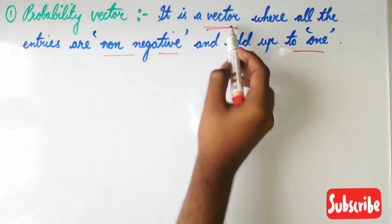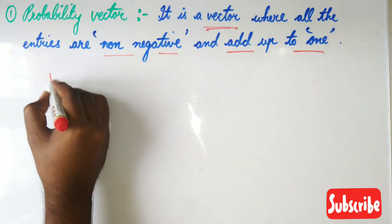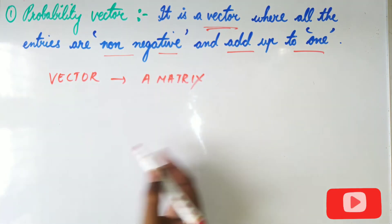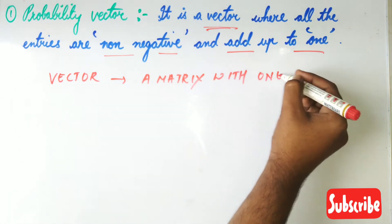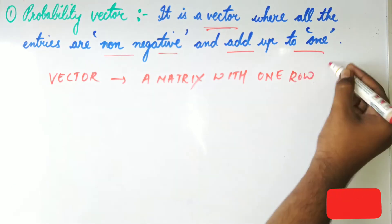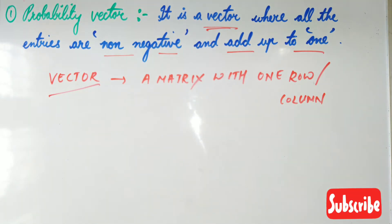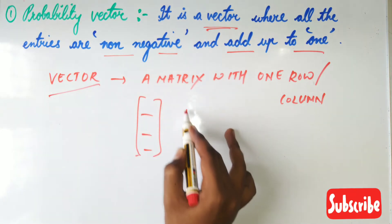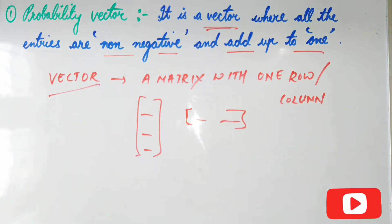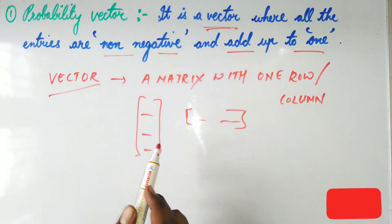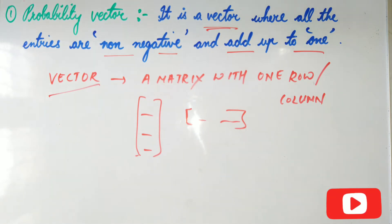A vector here means a matrix — a matrix with one single row or column, that is nothing but a vector. So a probability vector means a vector which is in the form of a matrix where entries should be non-negative, meaning positive, and they should add up to exactly one. Their sum should be unity.